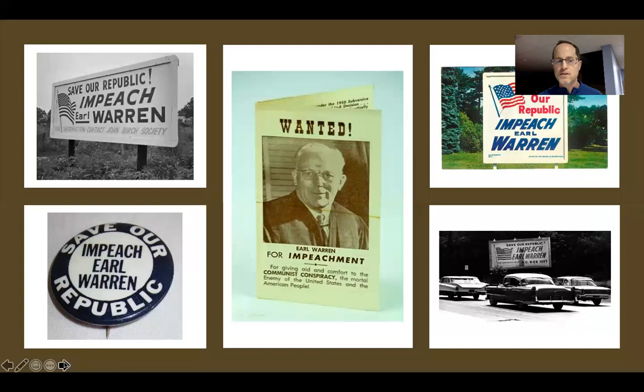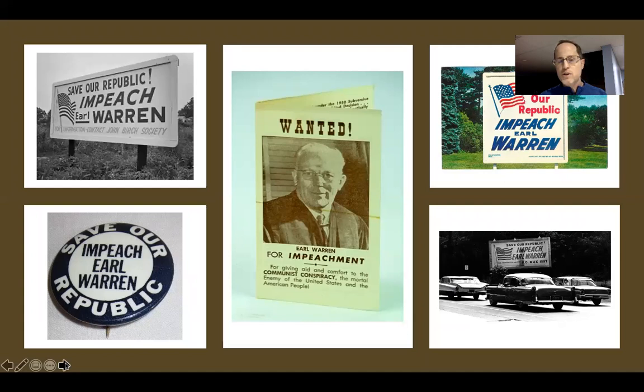During the mid-1950s, there were efforts to impeach Warren. They didn't achieve a majority of the public. These efforts were inspired by the John Birch Society, a relatively new and fairly radical far-right group that was primarily concerned about communism spreading in America and a sense that an anti-Christian movement would dominate America.